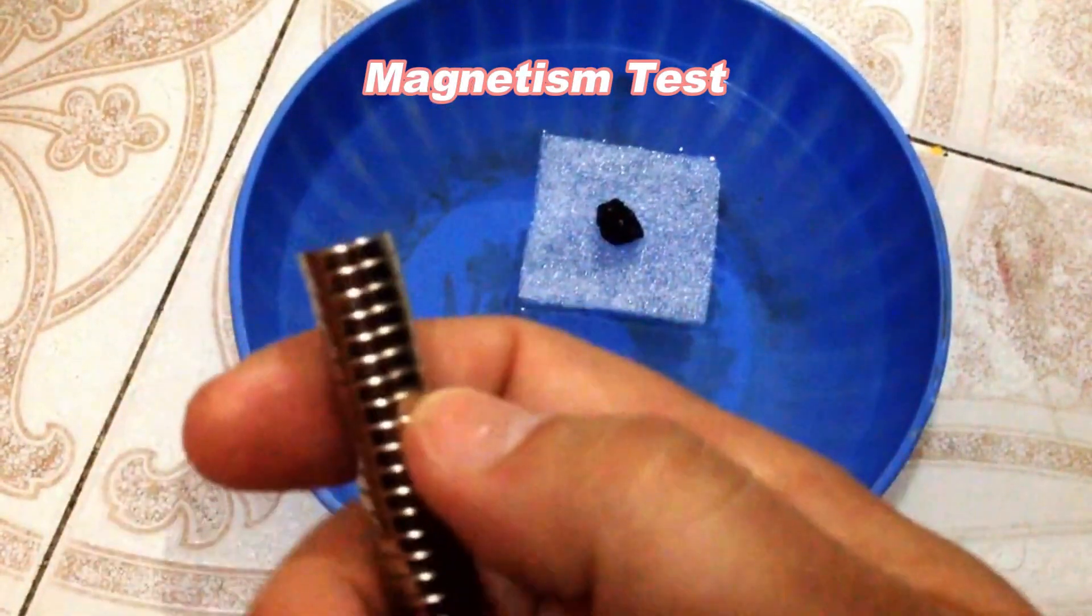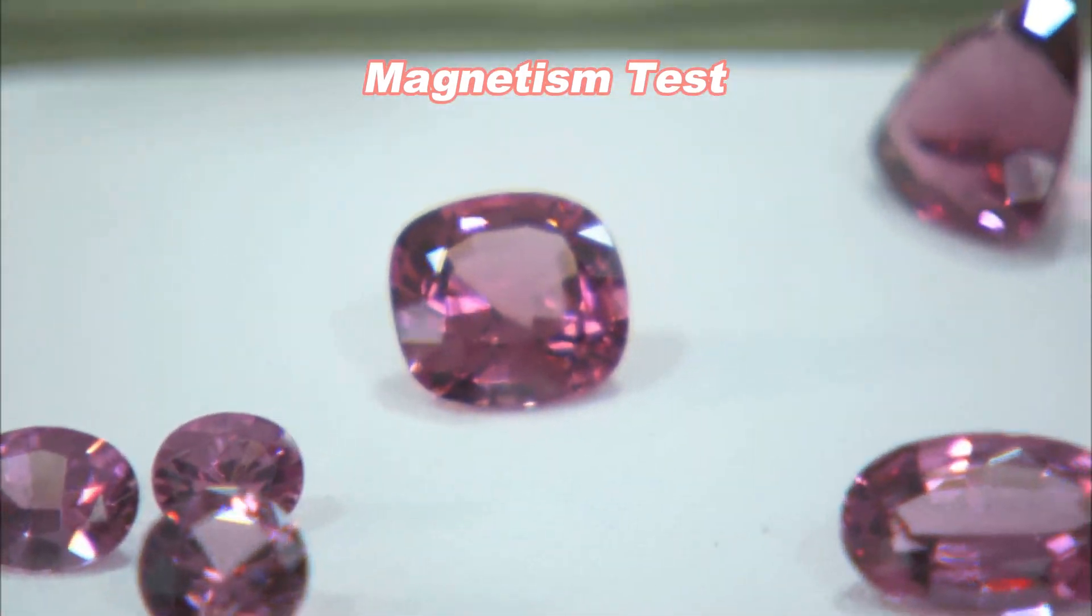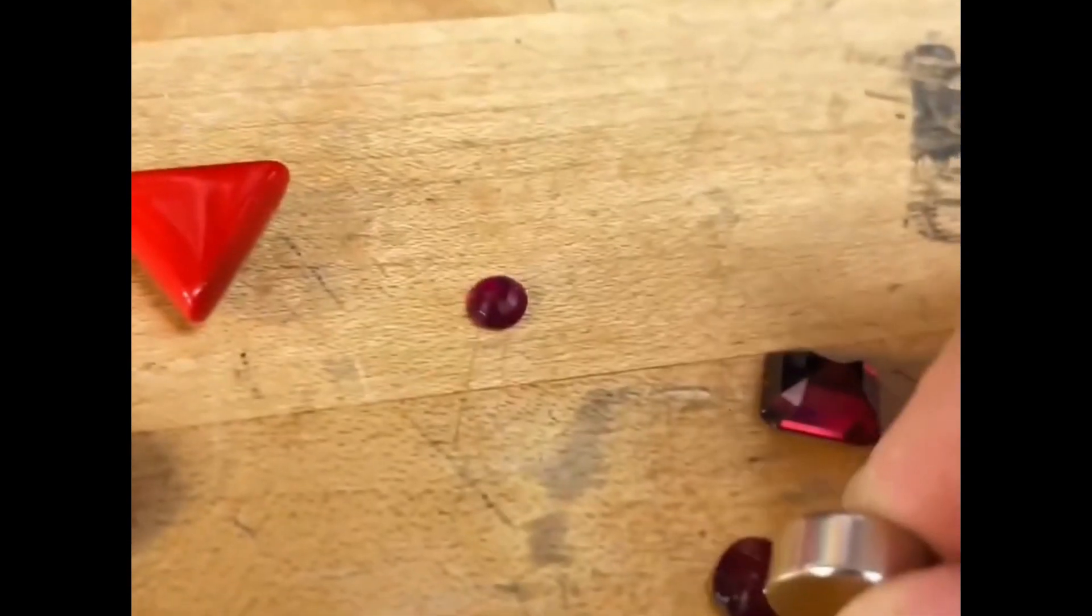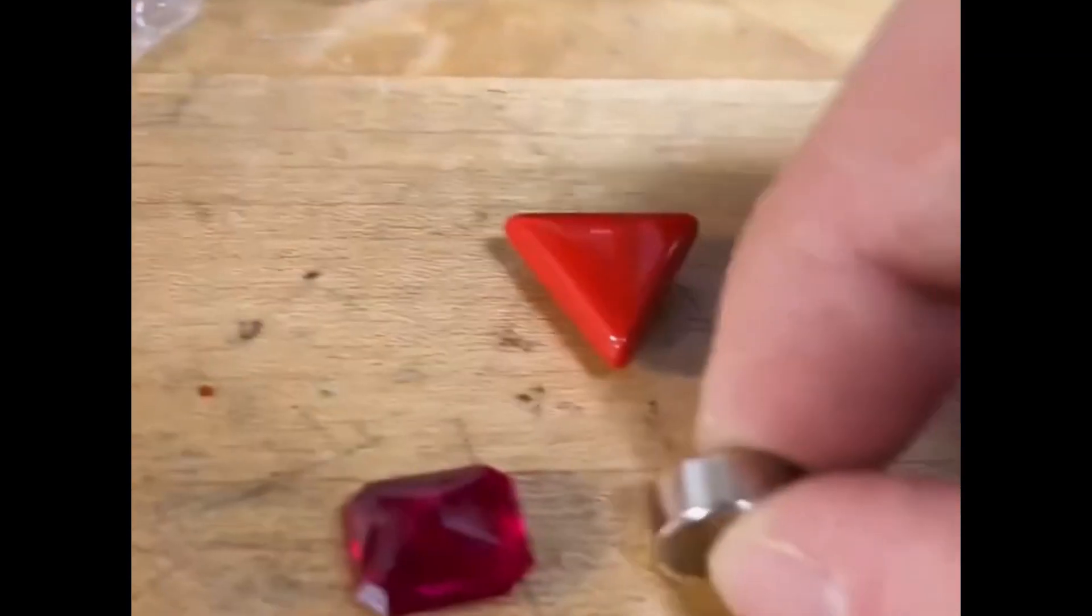Magnetism Test: Spinels are typically non-magnetic. You can use a small magnet to check if the rough spinel exhibits any magnetic properties. If it attracts the magnet, it may not be spinel.